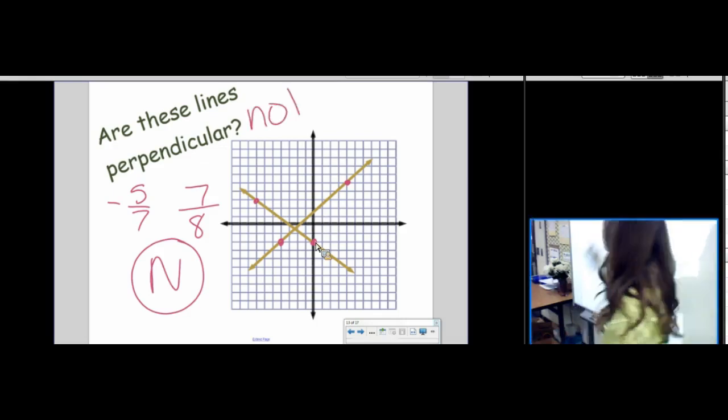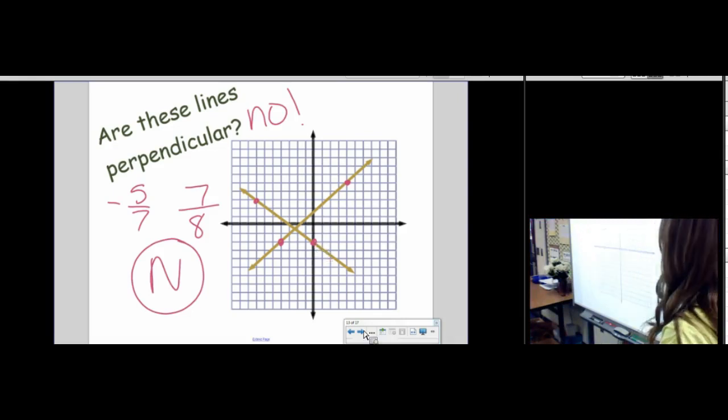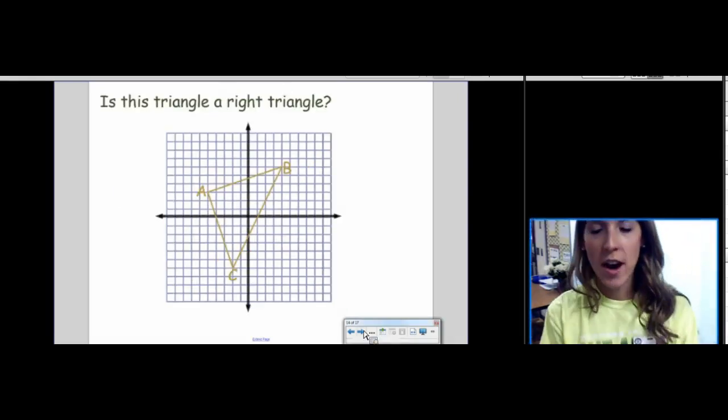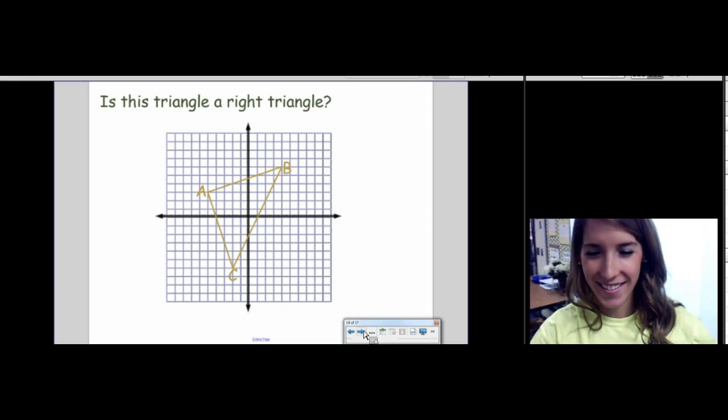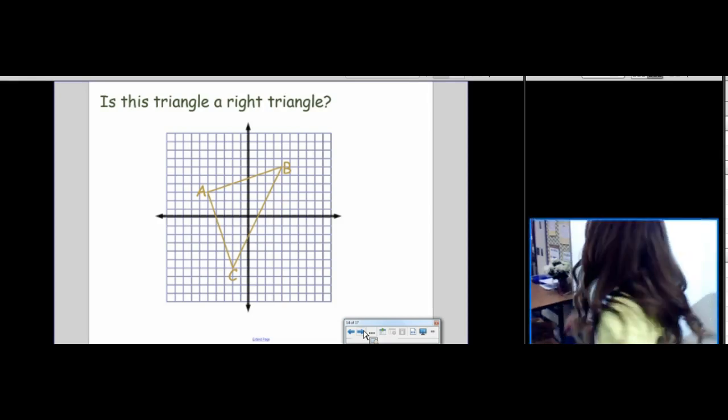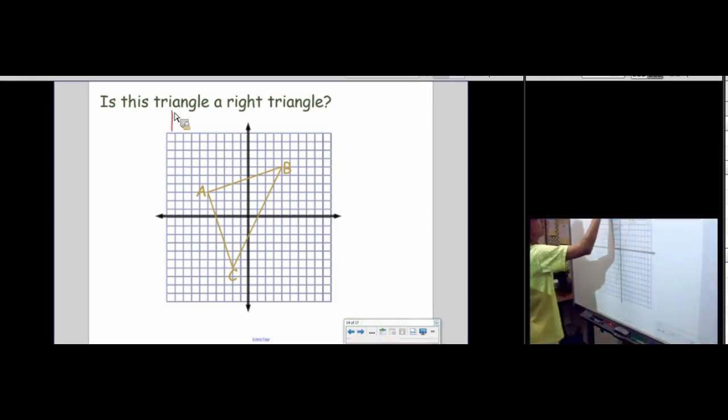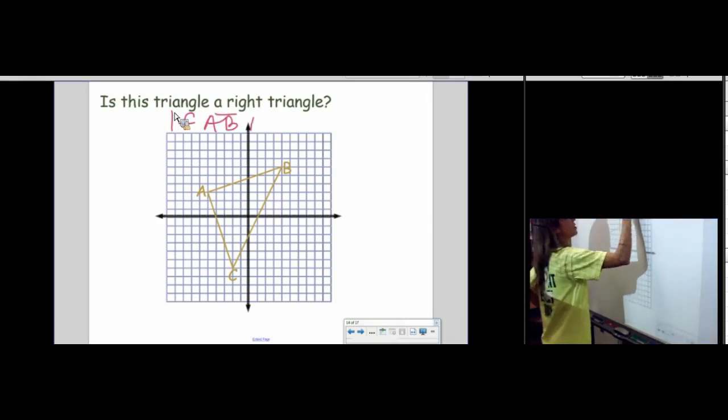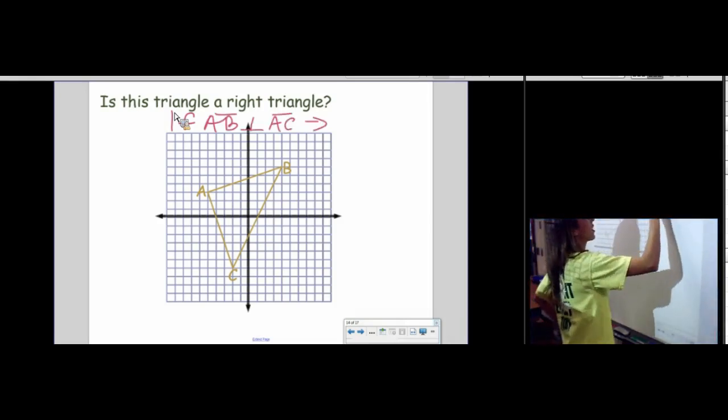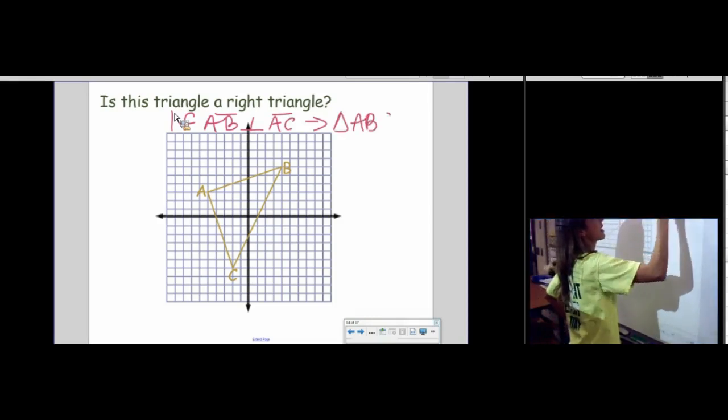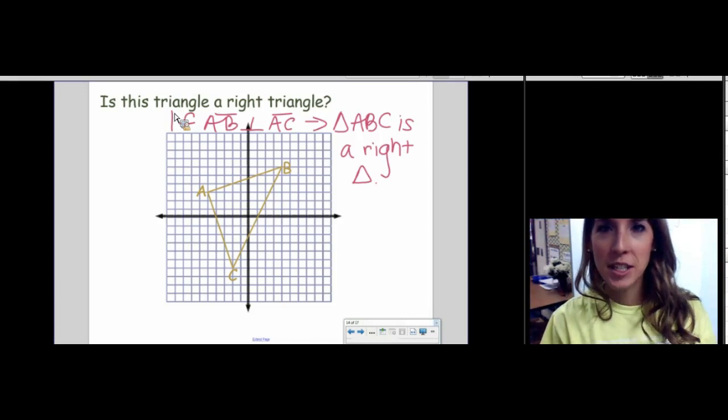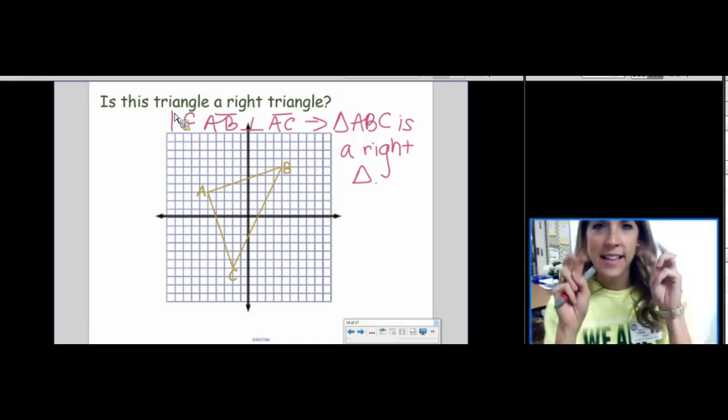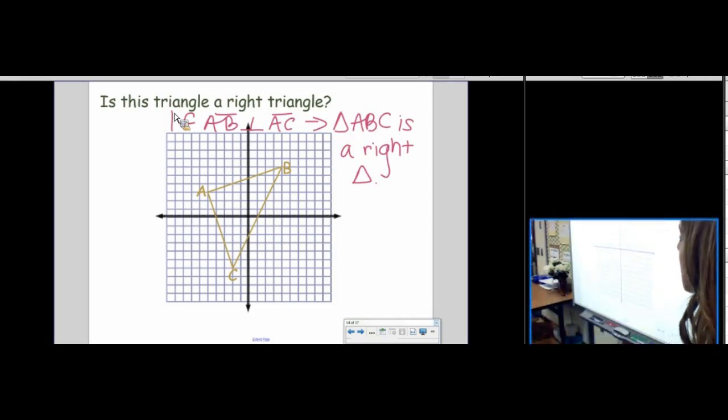Is this triangle a right triangle? How would we determine if this is a right triangle? What would we need to do? Find the slopes. It should be perpendicular to AC. Very good. I like that. If AB is perpendicular to AC, then triangle ABC is a right triangle. It's always good to justify our problem with a conditional, an if-then statement. So, we're trying to determine if this is a right angle.